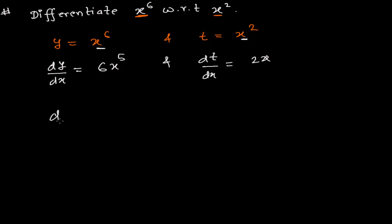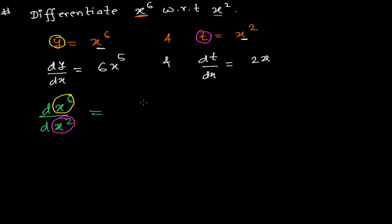Now the trick: we need to find the derivative of x to the power of 6 with respect to x squared. In place of x to the power of 6 we write y, and in place of x squared we write t. So the derivative of x⁶ with respect to x² is the same as the derivative of y with respect to t. This is now something like the chain rule.